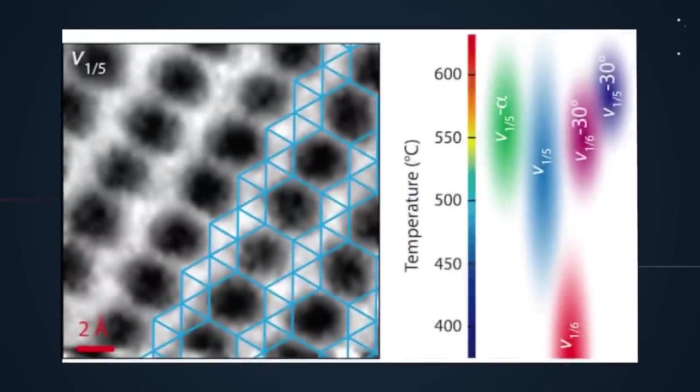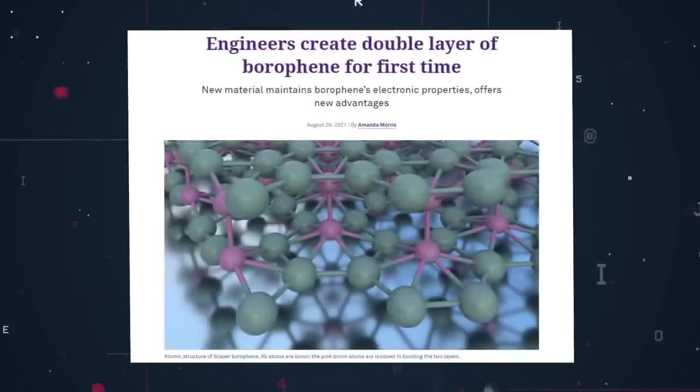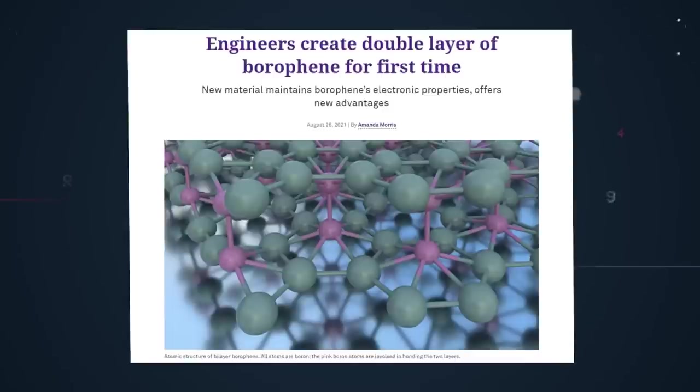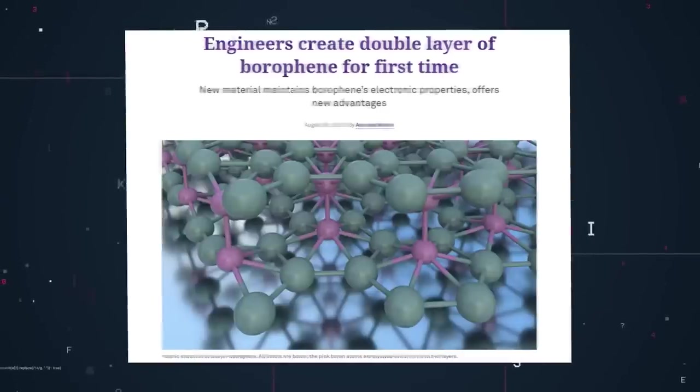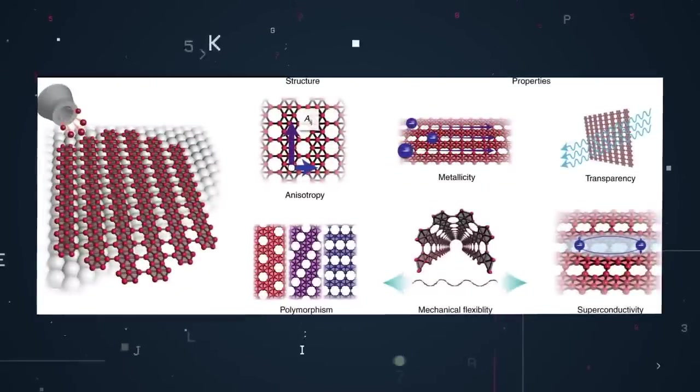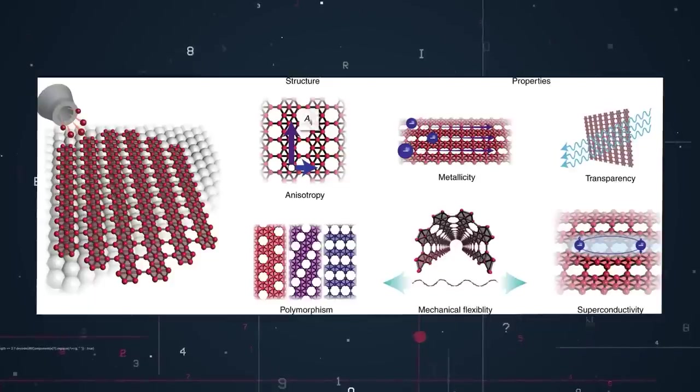Because bulk boron is not layered like graphite, growing boron beyond single atomic layers leads to clustering rather than planar films. However, a team of Northwestern University engineers has managed to create a double layer of atomically flat borophene. This represents a huge step in making borophene becoming as commonplace as graphene, which will accelerate its application.